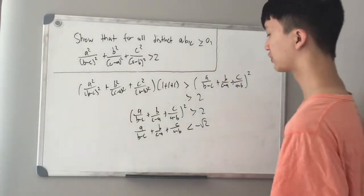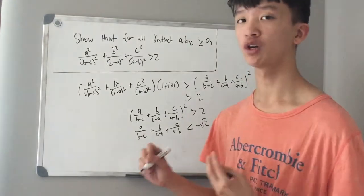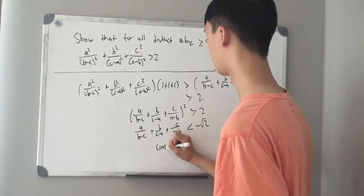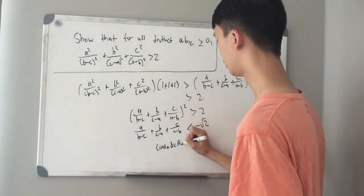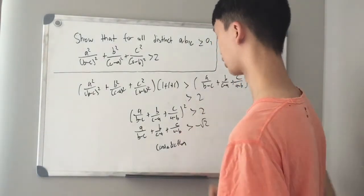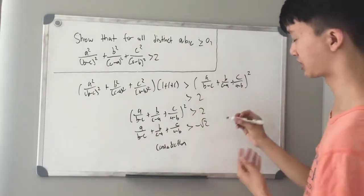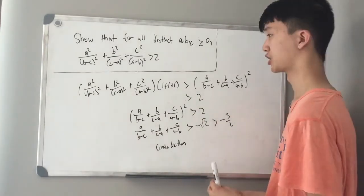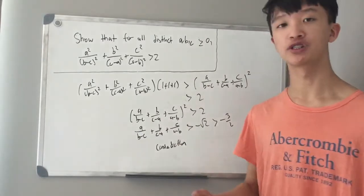But actually we want to move the equality sign the other way, so we are going to prove this by contradiction. For a contradiction, we change the sign of the inequality. To prove this, it will suffice to show that the sum is greater than negative 3 over 2. Now I'm going to move this to the top and introduce some new terms.